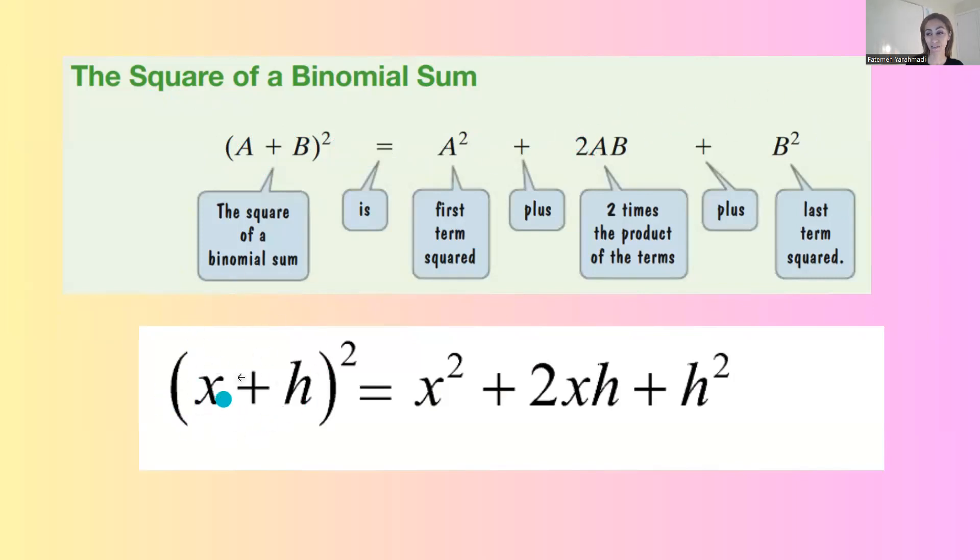So since on the numerator you have x plus h to the second, a is x and b is h. So basically you have x squared plus 2xh plus h squared.